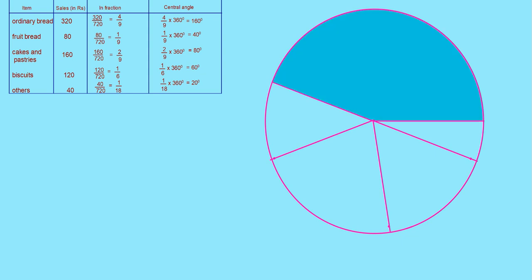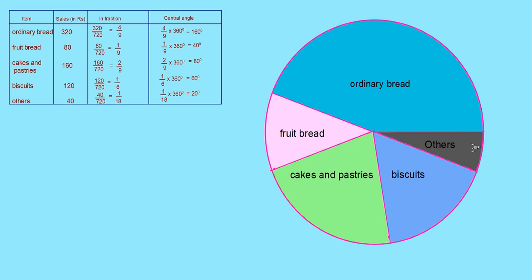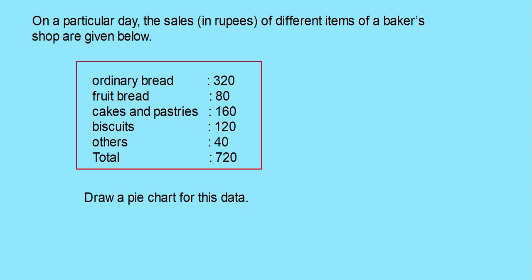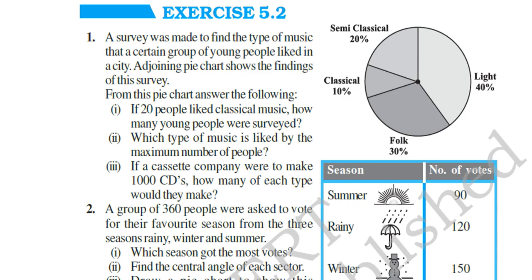Now shade each sector. This represents ordinary bread, this sector represents fruit bread, this represents cakes and pastries, this sector represents biscuits, and the last 20 degrees represents others. This is how you draw a pie diagram when information is given in tabular form. Here you have Exercise 5.2 — do it yourself. That is all for today's class.